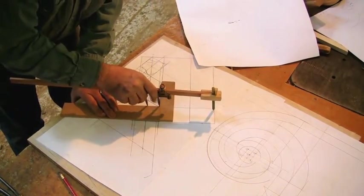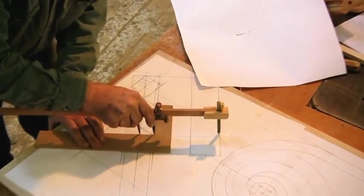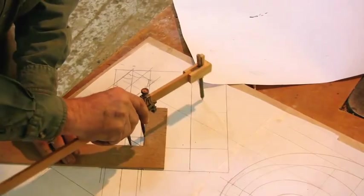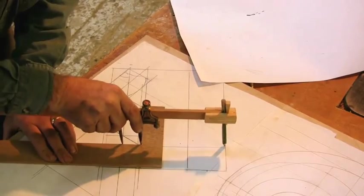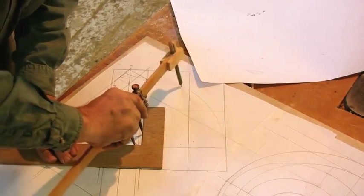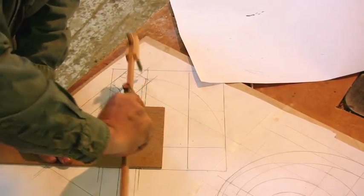And I can very carefully swing an arc right down like that, right down like that. And that arc will be a quarter of an ellipse.